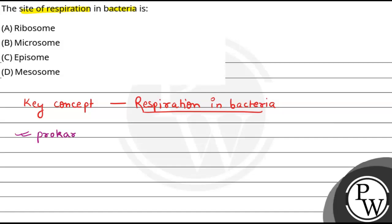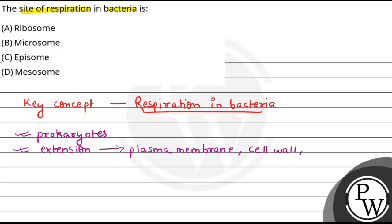And if we talk about prokaryotes, then we know that there are some extensions or extensive structures. These extensions are present either in the plasma membrane — our example being Mesozoome — or in the cell wall, like Pili and Fimbria, or in the cytoplasm, like that of the flagella, where extensions are related to the cytoplasm.